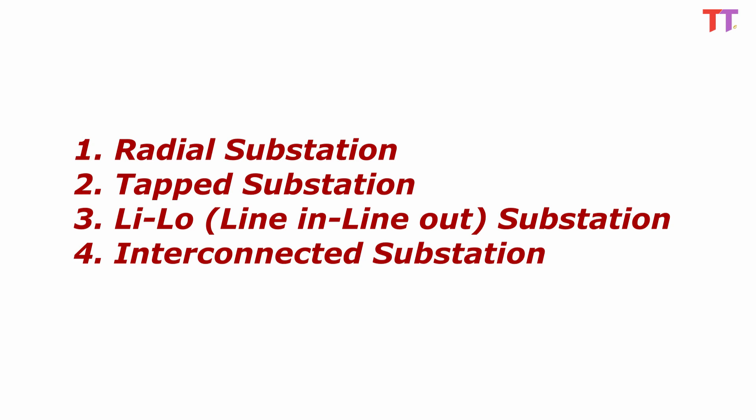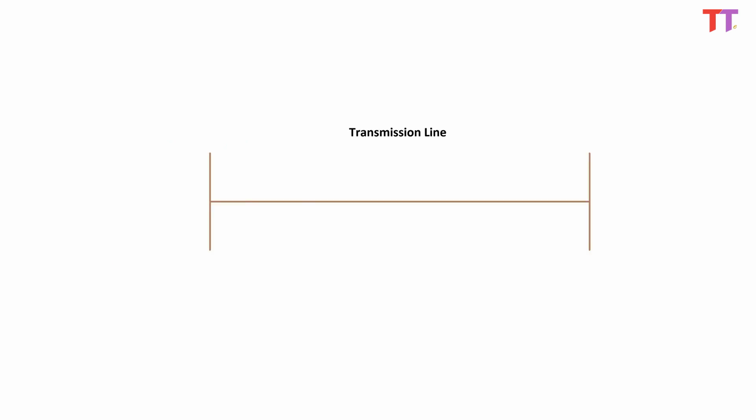Before starting with interconnection layouts, let's understand that every transmission line has at least two circuit breakers installed at the ends of the line. Also there are line and bus isolators on both sides of the circuit breaker. Hence in case of a fault on the transmission line, circuit breakers at both ends of the line trip, isolating the fault completely.